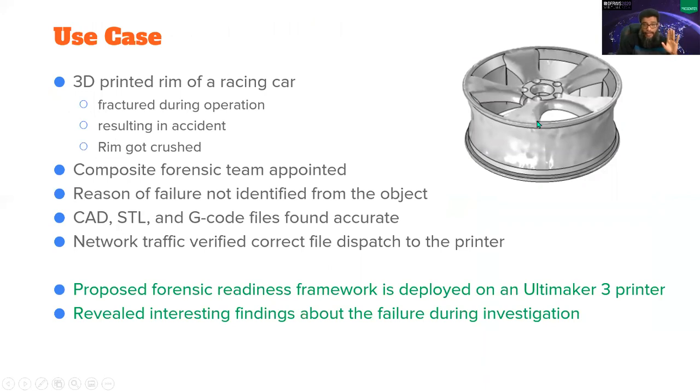So this is a hypothetical use case. We did not actually print it. We did not have a metal printer. So this is a 3D printed rim of a car that got fractured during operation prematurely and resulting in an accident and the rim got crashed. So forensic analysis could not reveal because it was terribly crushed, could not reveal any information about the failure. Then the forensic team evaluated the CAD file, STL file and G code file and they found all of them to be accurate. They saw the network traffic and they could trace the exact correct file was pushed from the control PC to the printer. So what next?